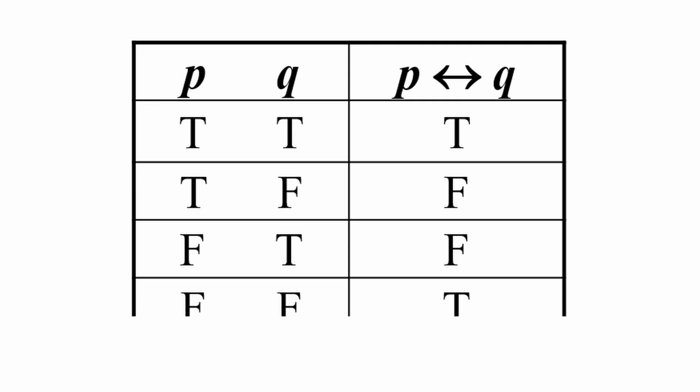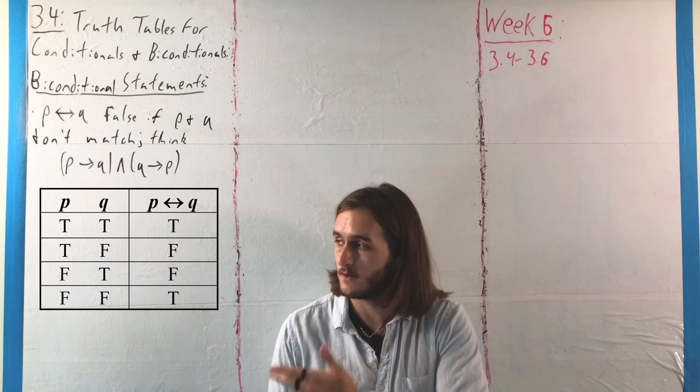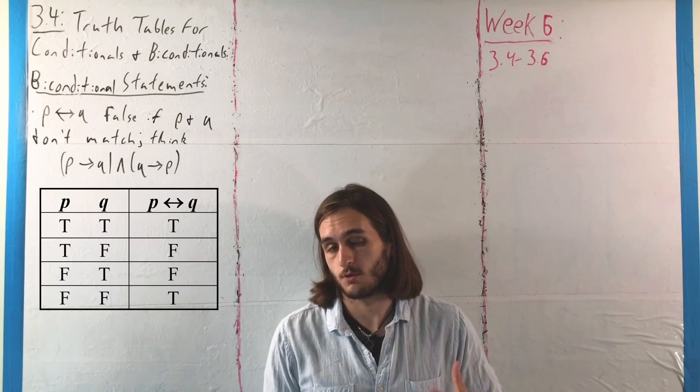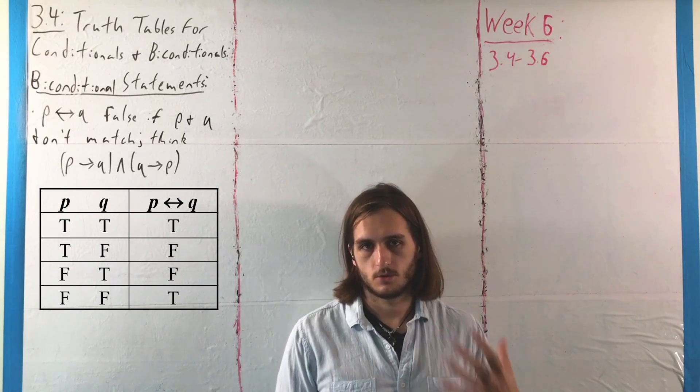And then if both are false, it is doubly trivially true. It's kind of silly to think of it that way, but essentially what we're looking for is mismatched truth value. That's how we determine whether or not a biconditional statement is true.